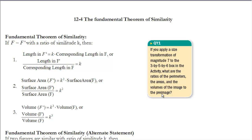If we have two figures, F and F prime, that are similar with a ratio of similitude of k, any length on the image will always be equal to k times the corresponding length on the pre-image. As a ratio, that's just like how we defined the ratio of similitude: length of the image over the corresponding length on the pre-image equals k.